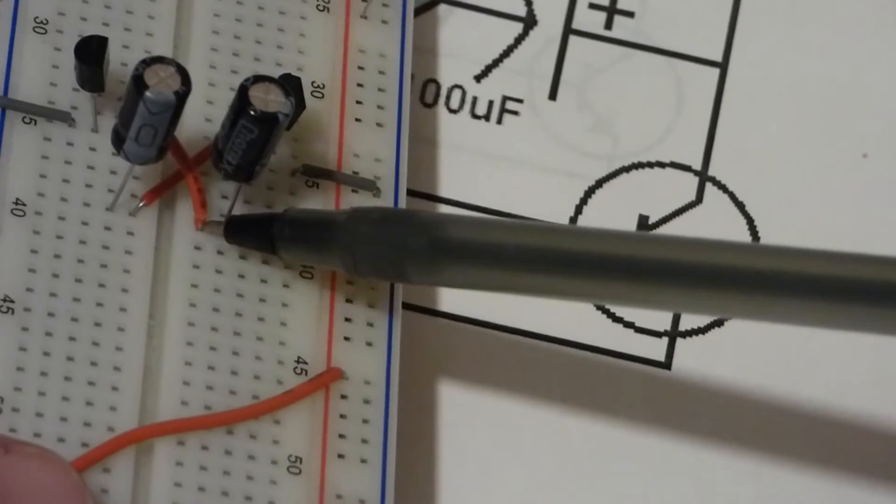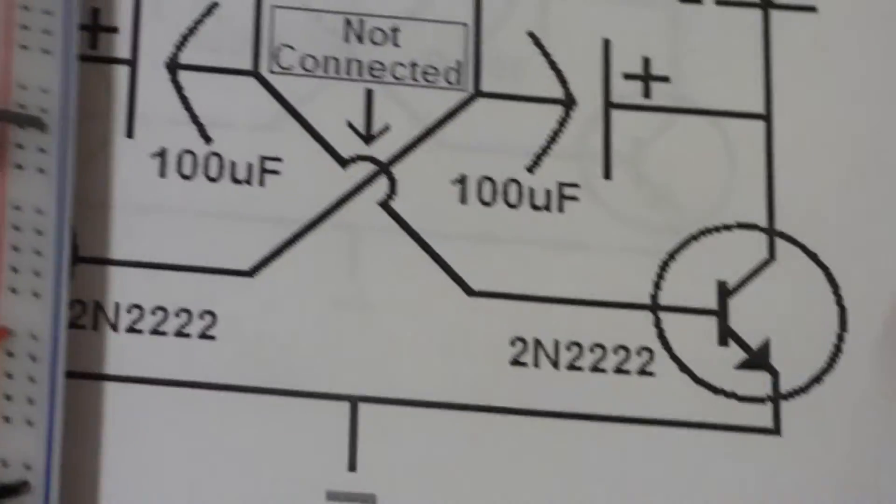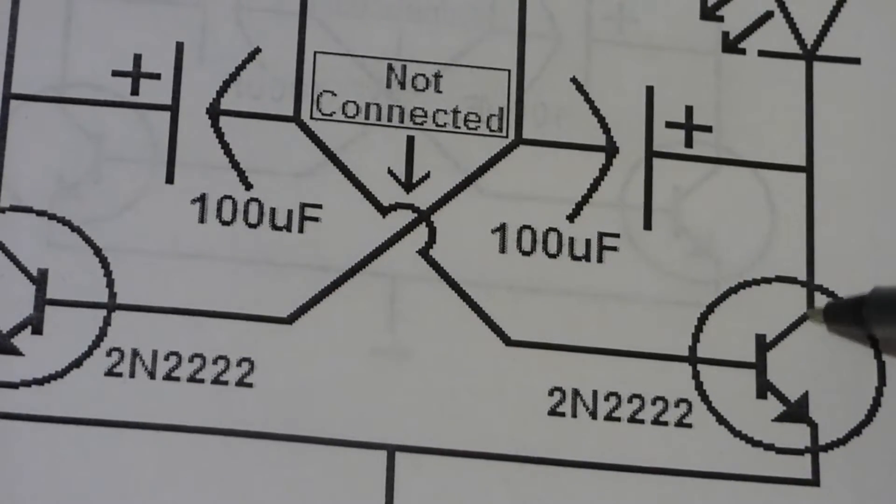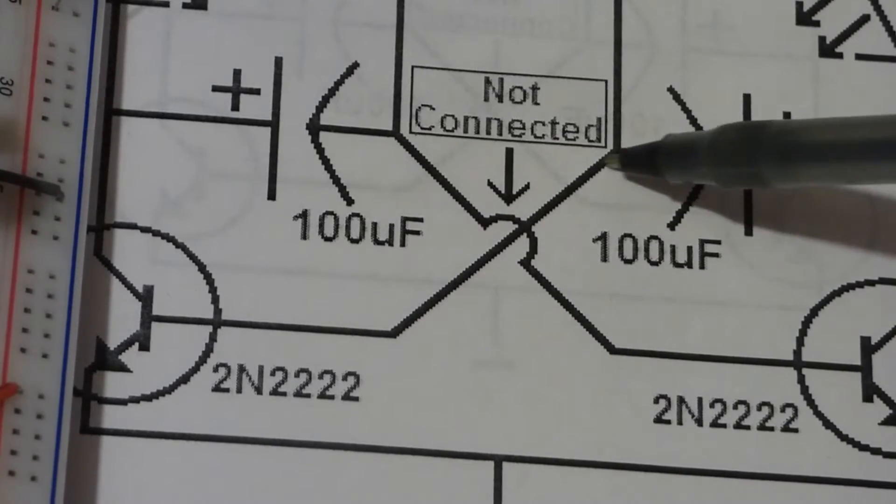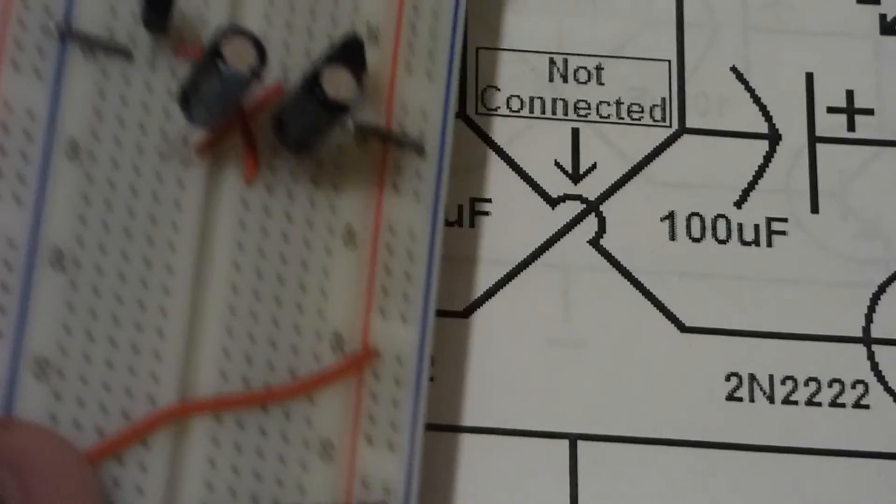And then, the negative side connects to the jumper that goes to the base of the other transistor. As you can see here, this capacitor connects to that collector. But then, the other side, the negative side, comes across the circuit to the base of the other transistor.